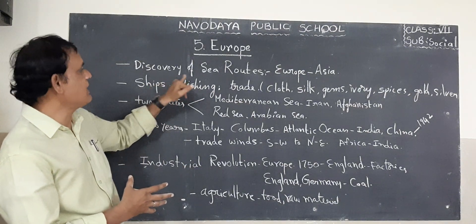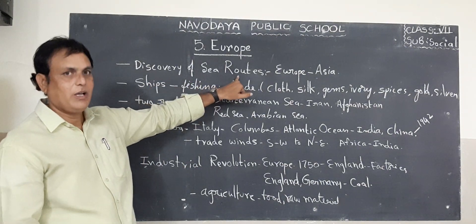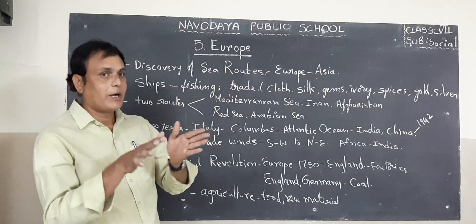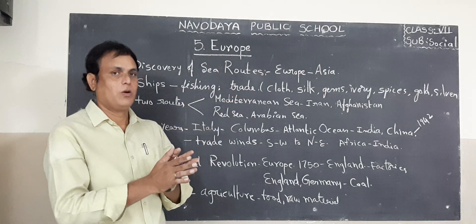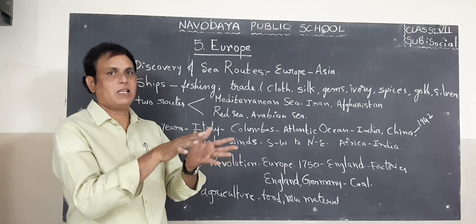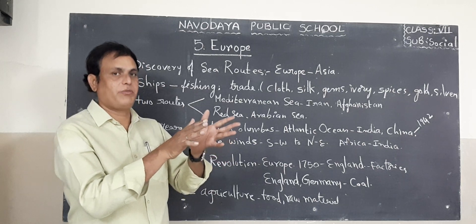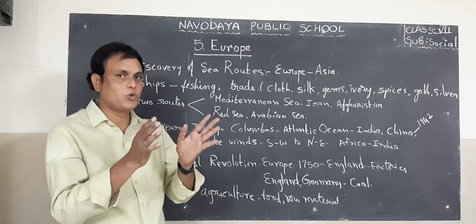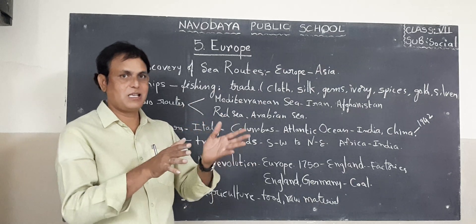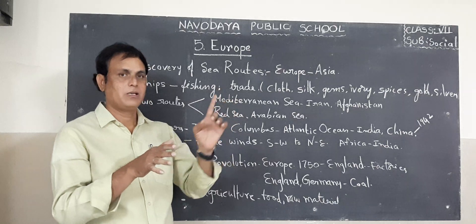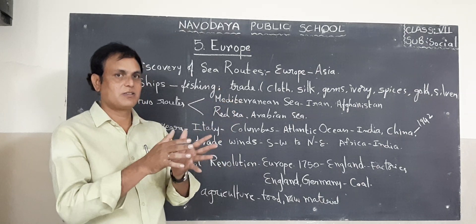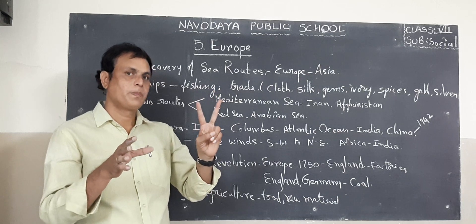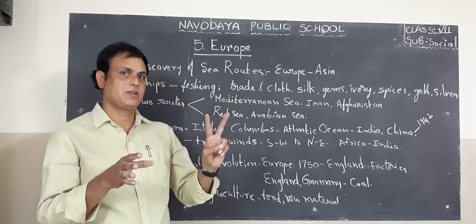Now, discovery of sea routes. In the previous class, I mentioned two main winds prevailing over the west and southeast directions. The two winds are Westerlies — that is the first type — and the second one is Trade Winds. These two winds are very important winds for European countries.